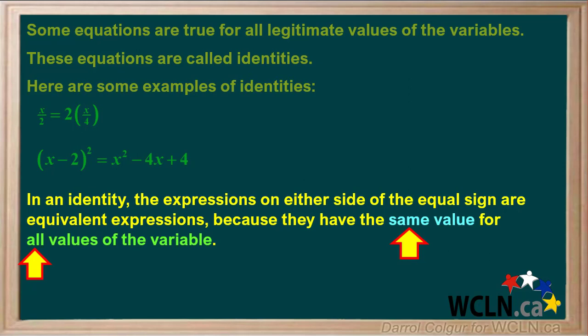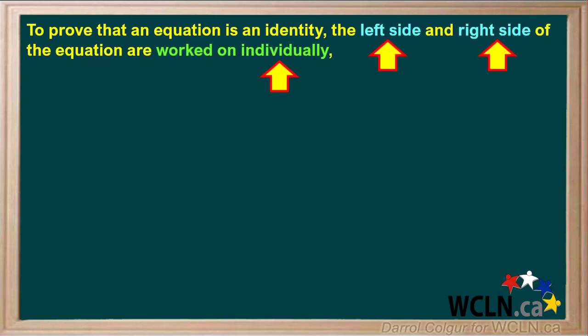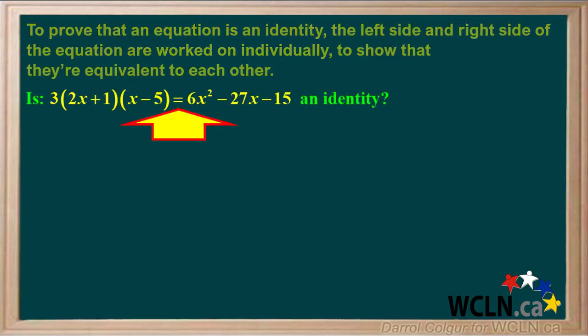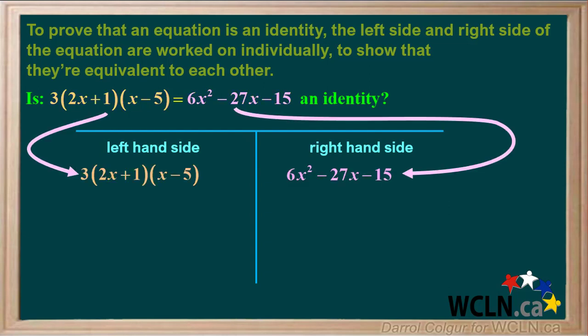So how can we prove that a particular equation is an identity? To prove that an equation is an identity, the left side and the right side of the equation are worked on individually. For example, we are asked if this equation is an identity. We start by drawing a simple table which gives room to work on each side individually to show that they're equivalent to each other. We will start by writing the left side and the right side of the equation on the appropriate sides of the table.